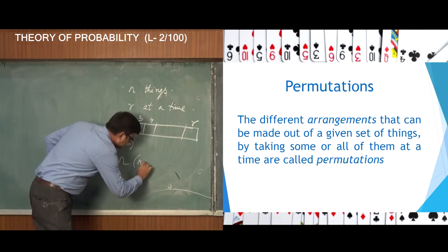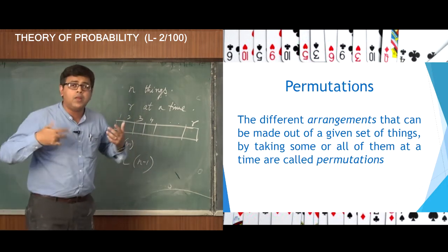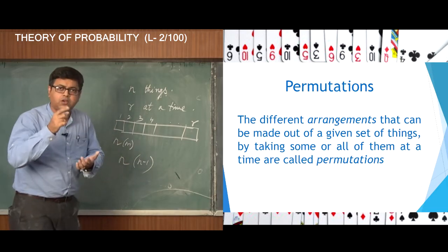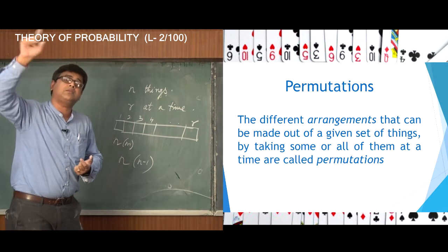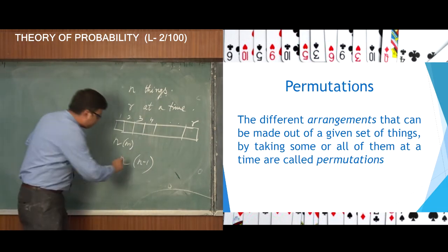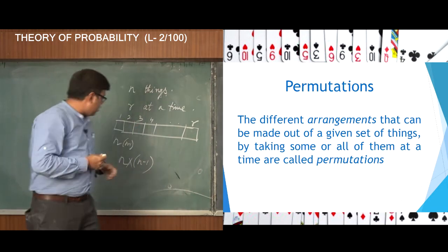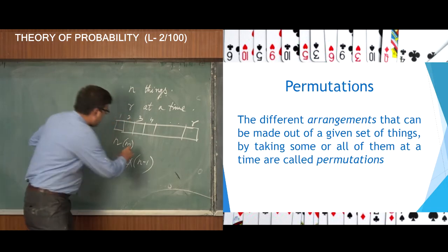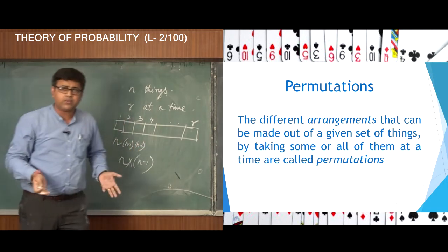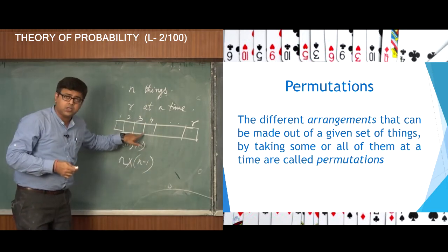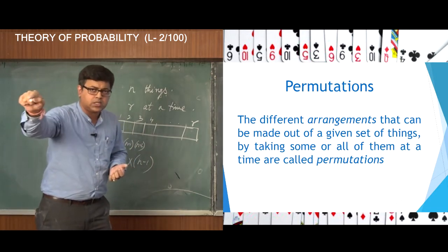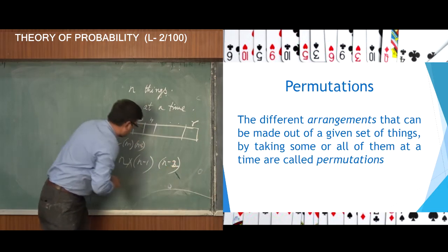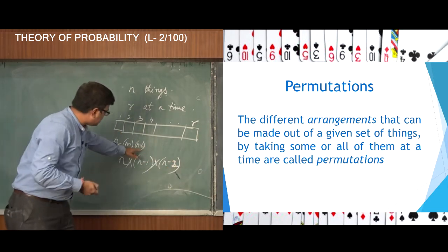You can fill up the first box in n ways and the second box in n minus 1 ways. For each of those n ways of filling the first box there are n minus 1 ways for the second, so total ways for both boxes is n into n minus 1. Once the second box is filled, I have n minus 2 things left, so the third box can be filled in n minus 2 ways, giving n into n minus 1 into n minus 2 total ways for the first three boxes.